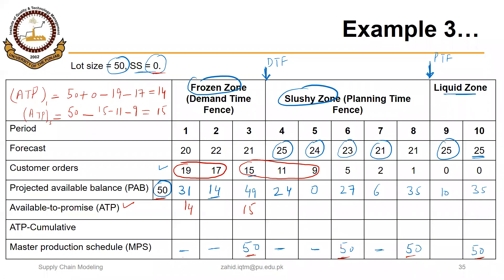Similarly, for period 6, ATP equals 50 minus customer orders until the next MPS. The next MPS is in period 8, so 50 minus 7 equals 43. For period 8, ATP equals 50 minus 1 equals 49. We are not certain about customer orders and MPS after period 10, so we cannot make ATP calculations beyond that. These are the discrete ATP values.